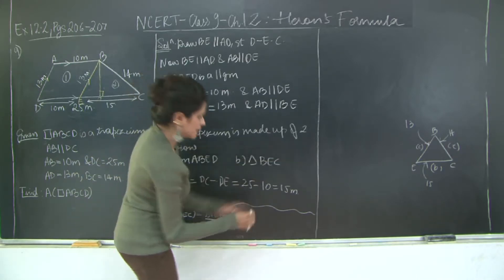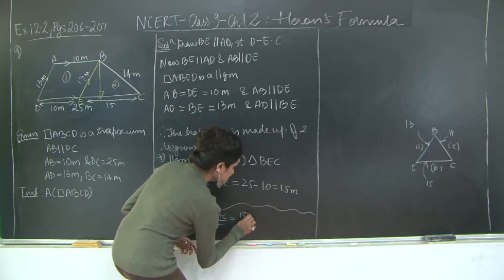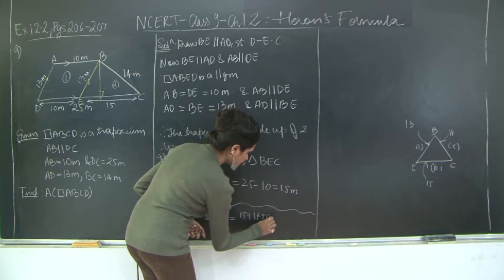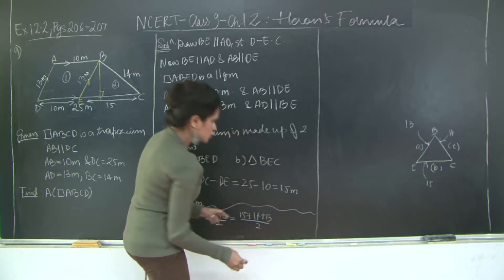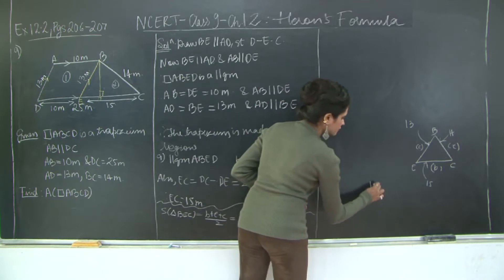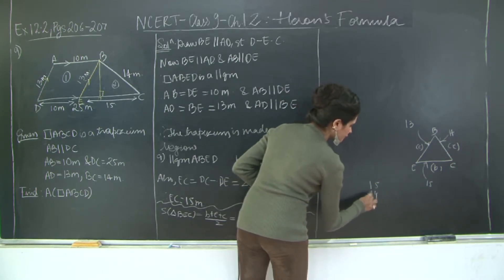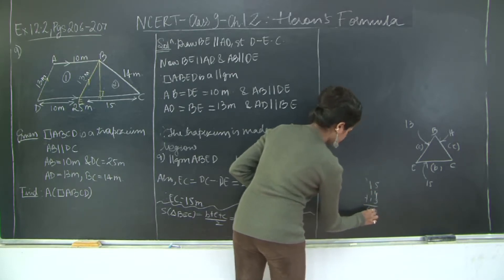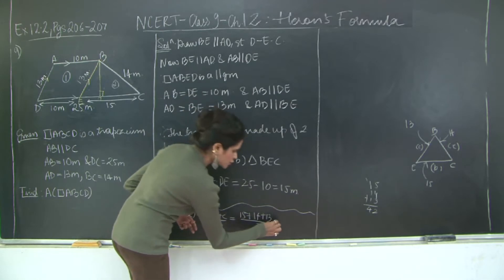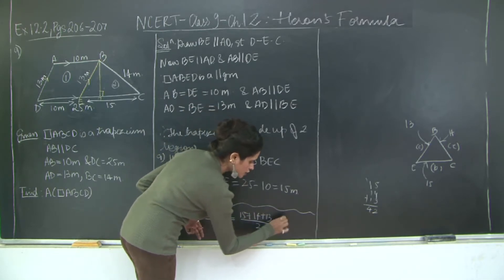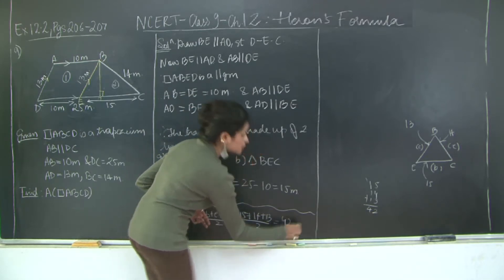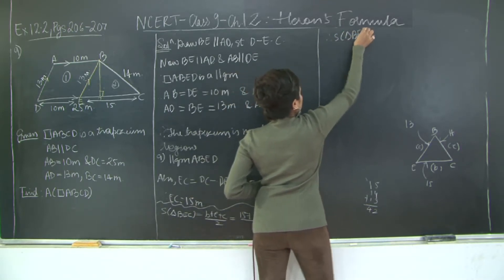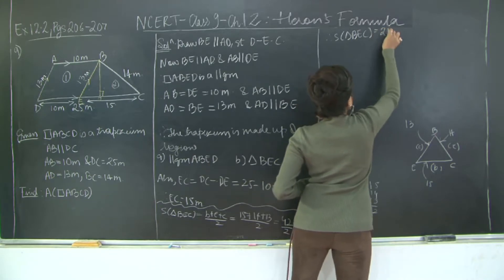So that is 15 plus 14 plus 13 divided by 2, which equals 42 divided by 2. Therefore the semi-perimeter of triangle BEC equals 21 meters.